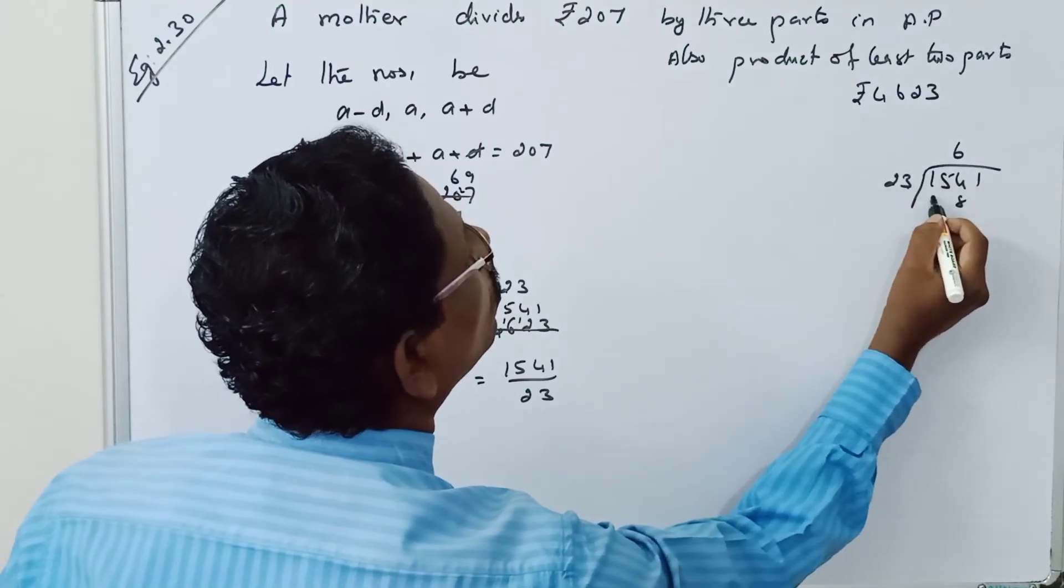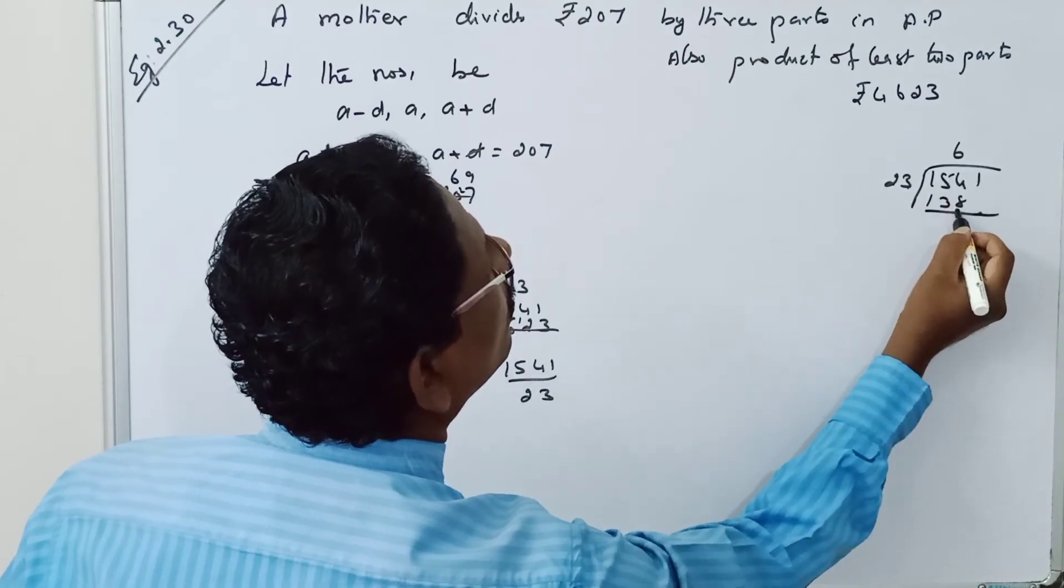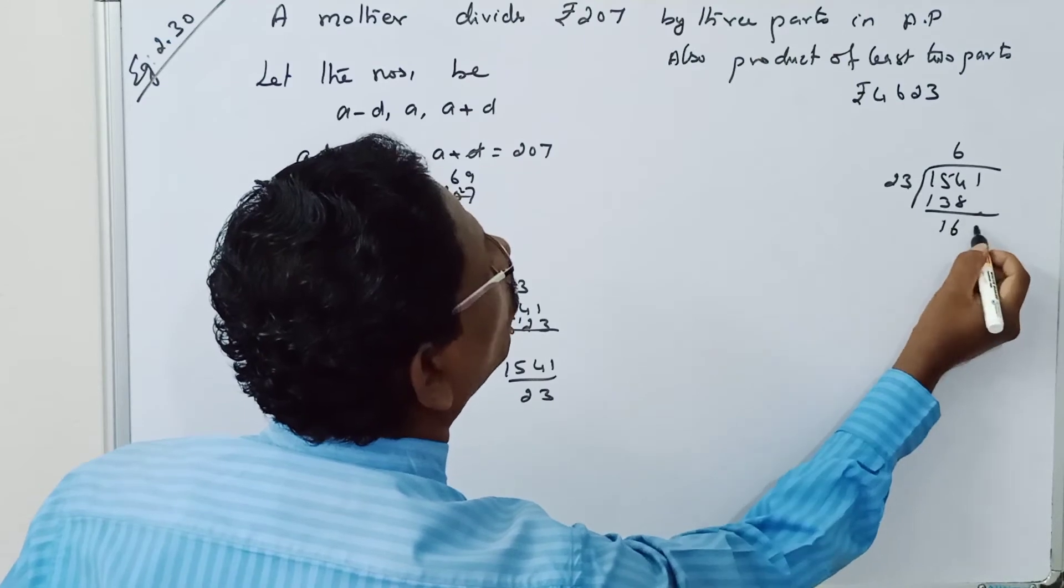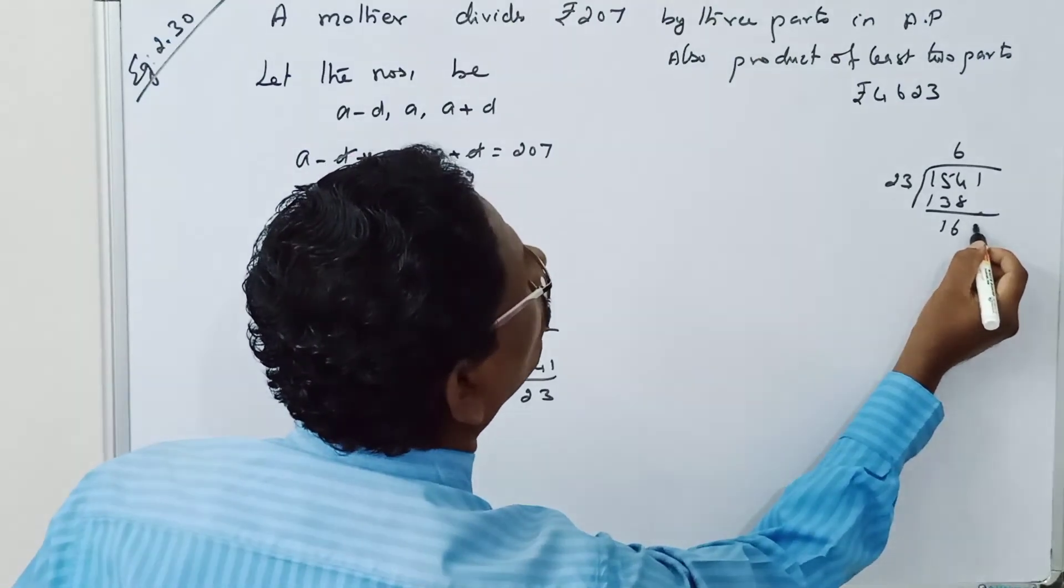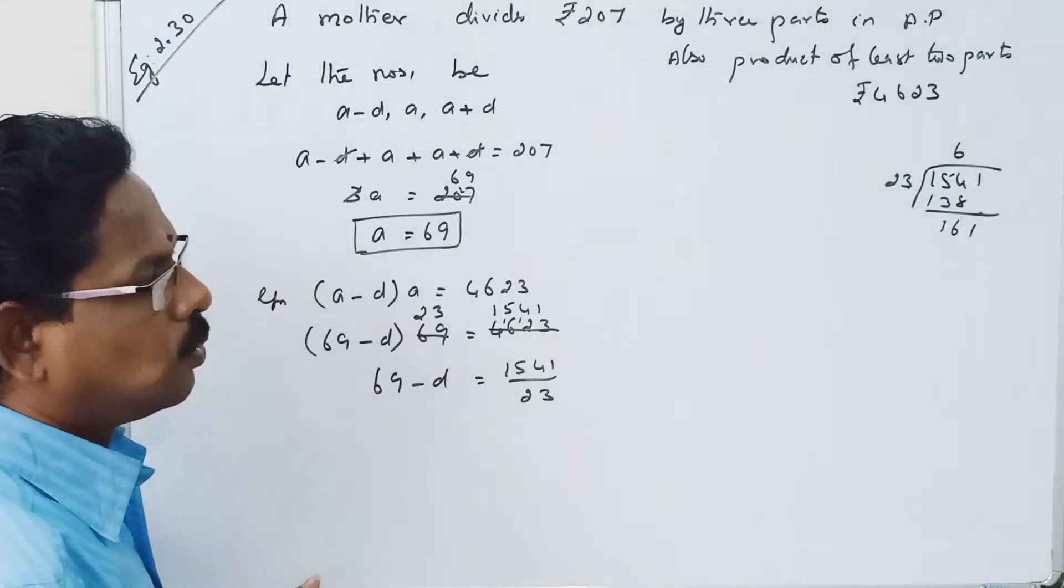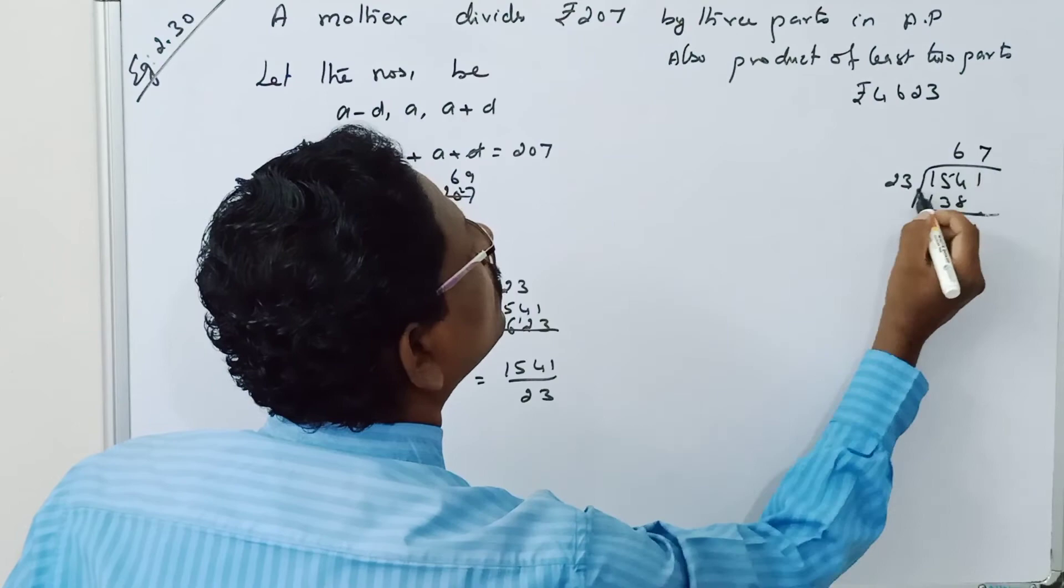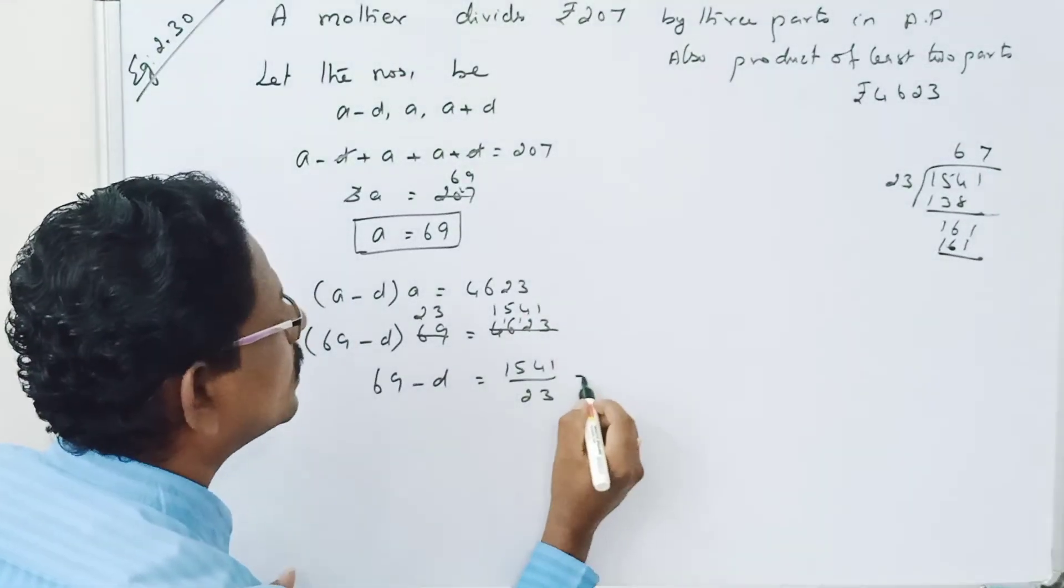Remainder 161. 7 times 23: 7 threes are 21, that's 161. So the answer is 67. 69 minus d equals 67.